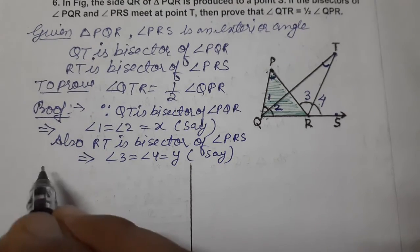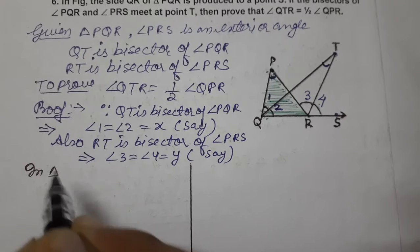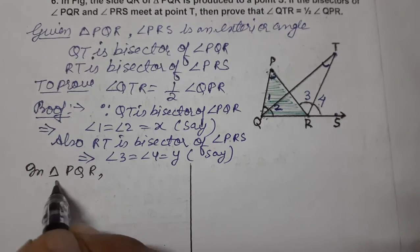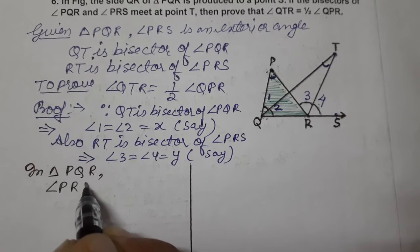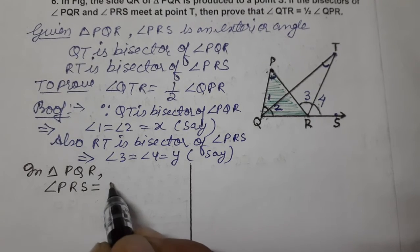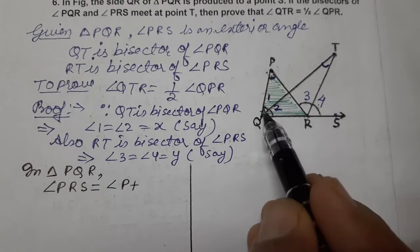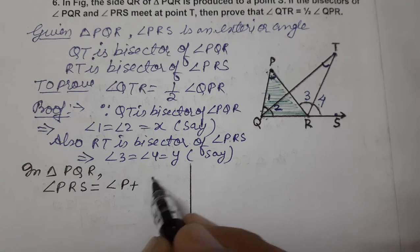In triangle PQR, the exterior angle is PRS. The exterior angle equals the sum of two interior opposite angles, so angle P plus angle Q, where angle Q means angles 1 plus 2.